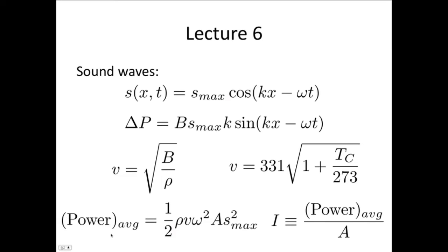So the average power carried by a sound wave is given by ½ρ, this is the density, v the velocity, ω² the angular frequency, A the surface area, s_max² the maximum displacement from equilibrium. And we saw that intensity is given by power over area. So generally, with sound waves, they're spreading out equally in all directions, and so the area is generally the surface area of a sphere, 4πr².